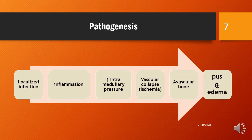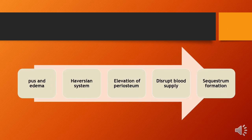Coming to the pathogenesis, a localized area of infection causes inflammation, leading to increased intramedullary pressure, which causes vascular collapse leading to ischemia. Ischemia leads to avascular bone, which acts as a source of infection, leading to accumulation of pus and formation of edema. The pus enters the Haversian system, causing elevation of the periosteum, and this disrupted blood supply leads to formation of sequestrum, which is a classical sign of osteomyelitis.